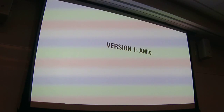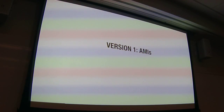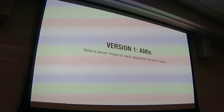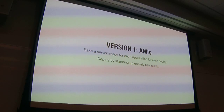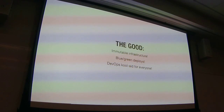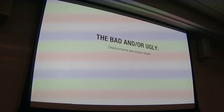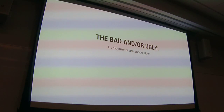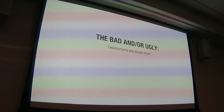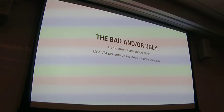Our version one fix, as many AWS users do and should if you're not running Docker, was AMI — making a server image for each application for each deploy. You deploy by standing up an entirely new stack: make the image, stand up a new stack, flip it over. That can be good because you have immutable infrastructure and proper deploys. But it's not perfect. It's really slow — a VM takes a couple minutes to provision. If you have to provision an entire stack when running at 100,000 requests per second, you're talking serious time. Having one VM per service also runs into very poor utilization.